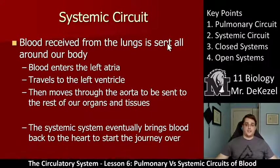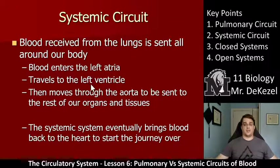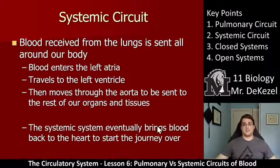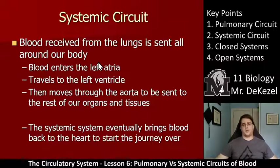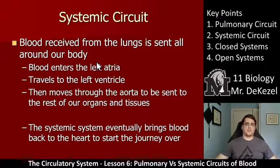Blood received from the lungs is sent all around the body in the systemic circuit. It travels through the left atrium, the left ventricle, and moves through the aorta to be sent to the rest of our organs and tissues. The systemic circuit eventually brings blood back to the heart to start the journey over: pulmonary circuit to pick up oxygen, systemic circuit to deliver it to the rest of the body, and repeat.